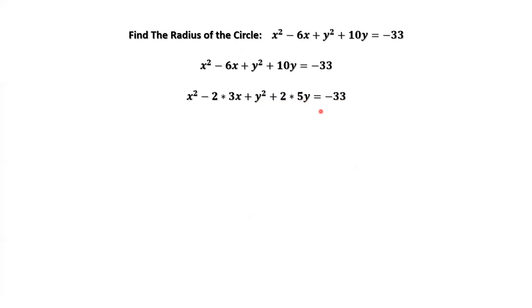What are we doing here? 6 equals 2 times 3. 10 equals 2 times 5. We are trying to complete the square to find h and k.